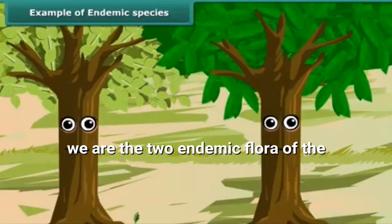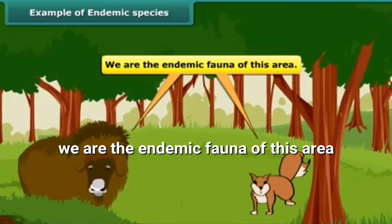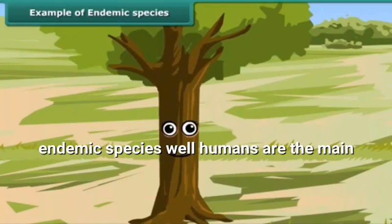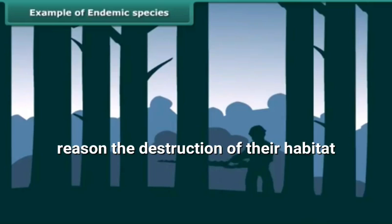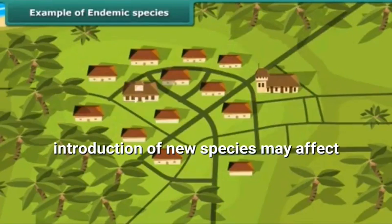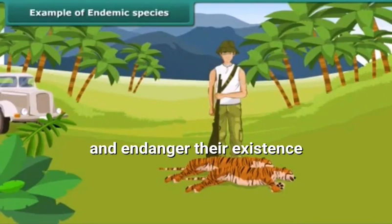These two plants are endemic flora of the Pansmari Biosphere Reserve. These two animals are the endemic fauna of this area. What factors lead to making them an endemic species? Well, human beings are the main reason. The destruction of their habitat, increasing human population, and introduction of new species may affect the natural habitat of an endemic species and endanger their existence.